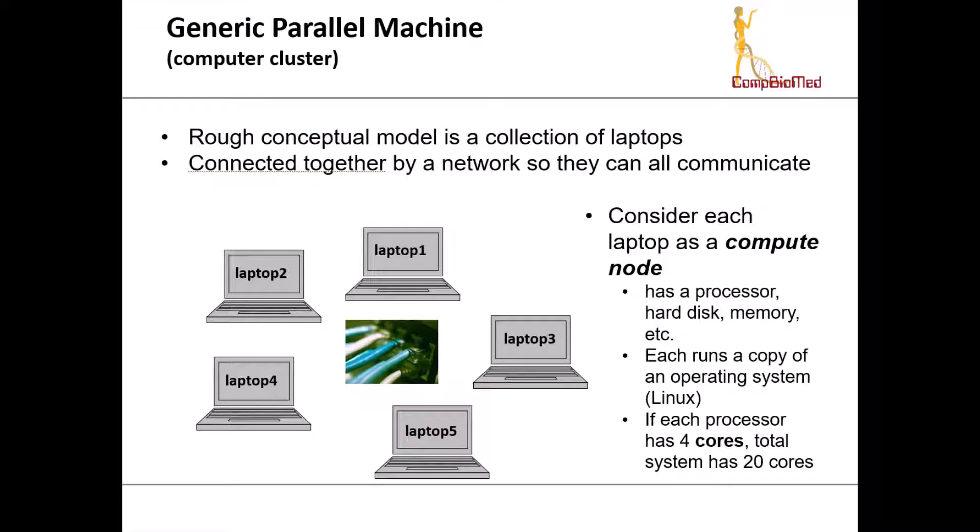So this is just a rough idea of a generic parallel computer, or a cluster it's sometimes called. Here we've got a rough conceptual model of a collection of laptops. We've got five laptops and they are connected together by ethernet cables. This is pretty much what an HPC system looks like. You can consider each laptop as what we call a compute node. Each node or laptop has a processor, a hard disk, memory, operating system, and each runs a copy of an operating system, typically Linux. Let's say each laptop here has four cores. Then for this system, we have a total of 20 cores available to us.